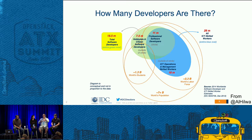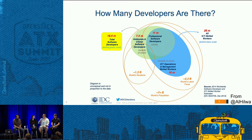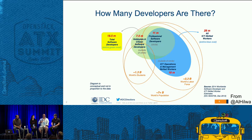Your job is to make those advocates powerful enough within their organizations that they can go swing the hammer and say 'I want to hire the Frontside, they seem to know what they're doing' or 'I want to adopt this technology,' 'I want to pilot a project with this technology,' or hire this consulting firm or whatever. It's making advocates out of individual developers by offering them something of such tremendous value.